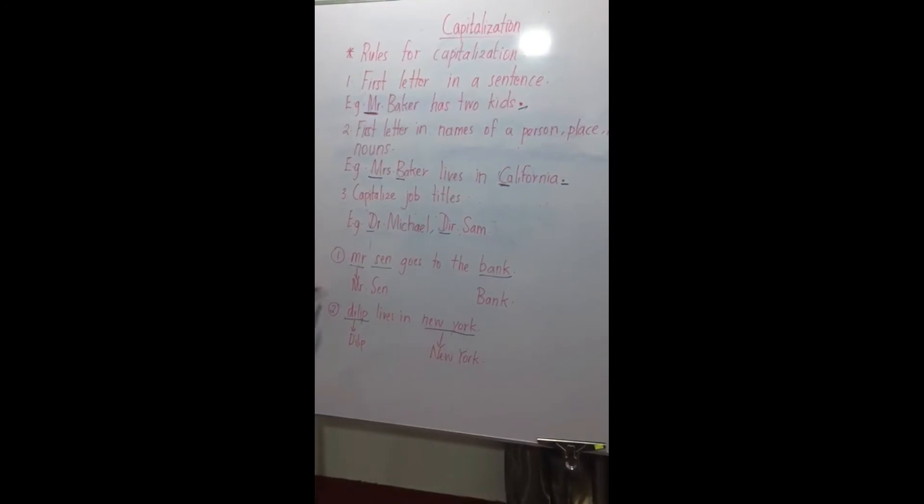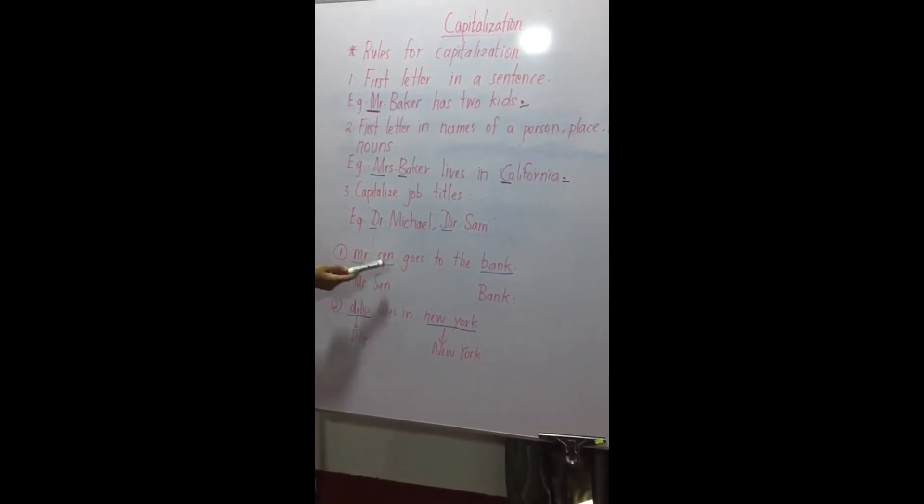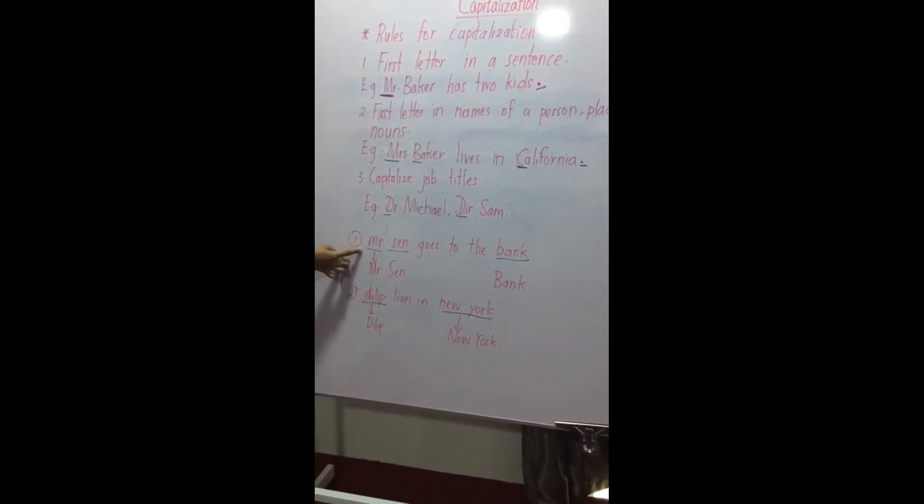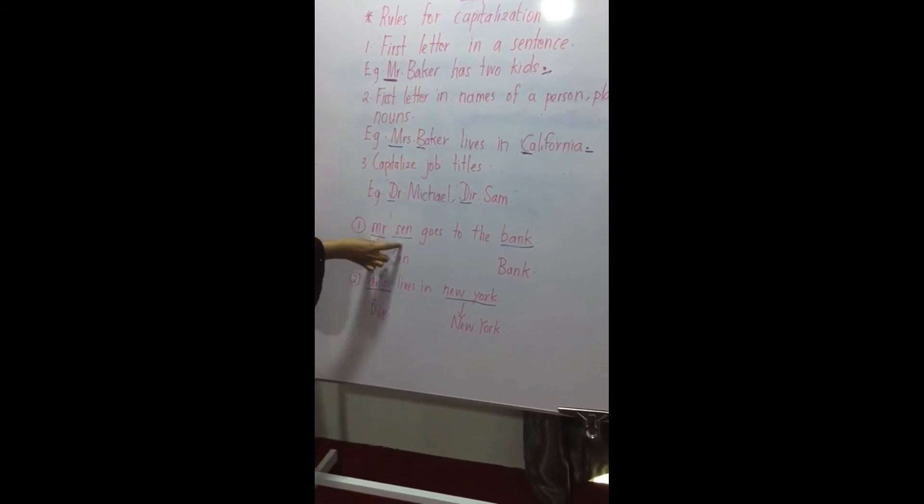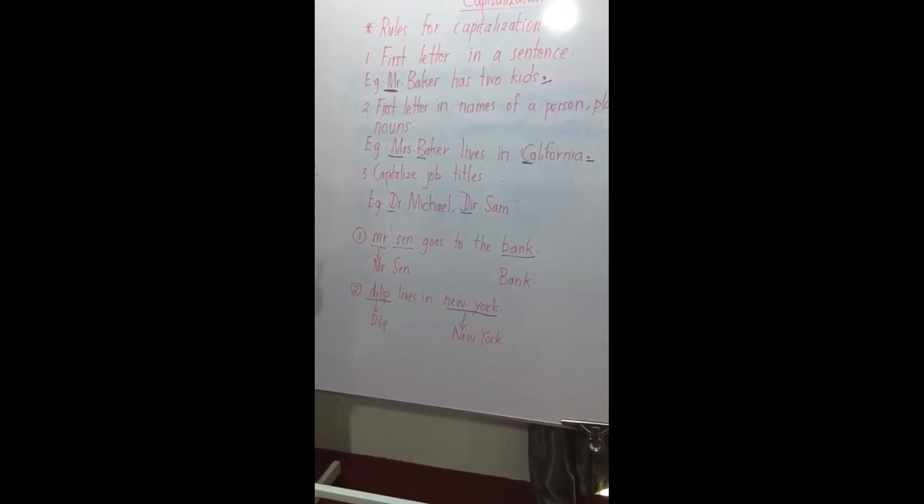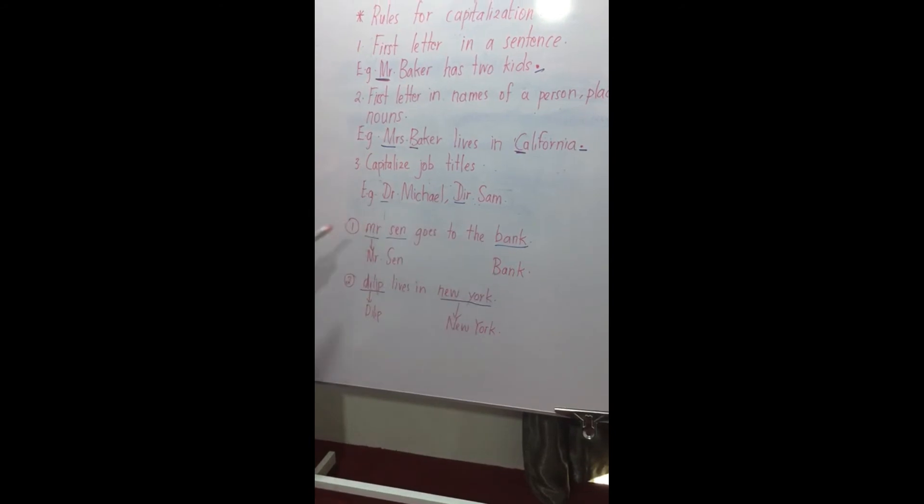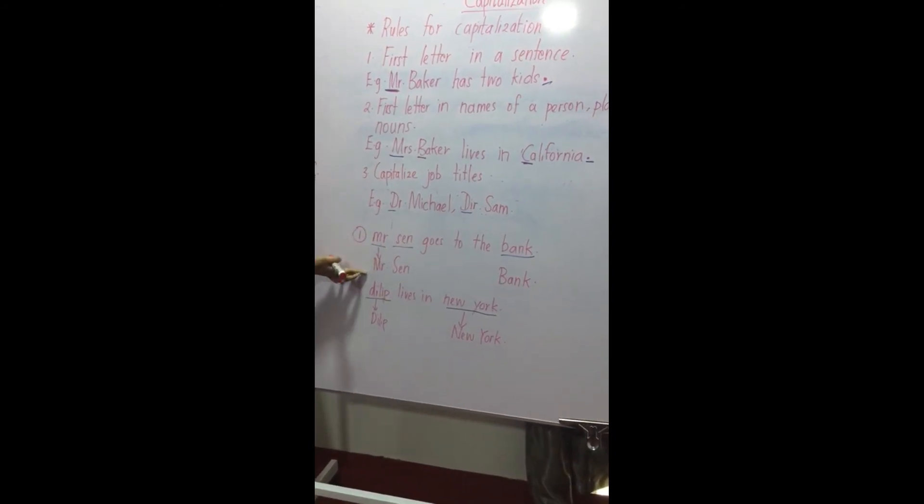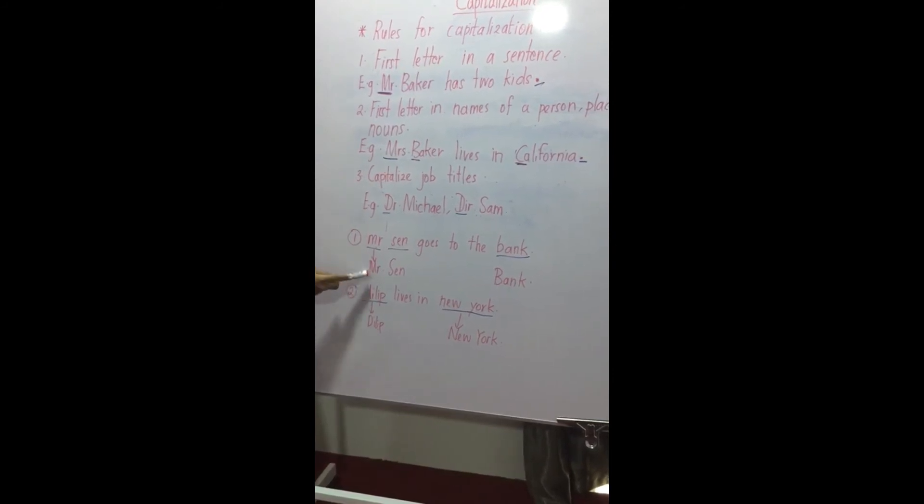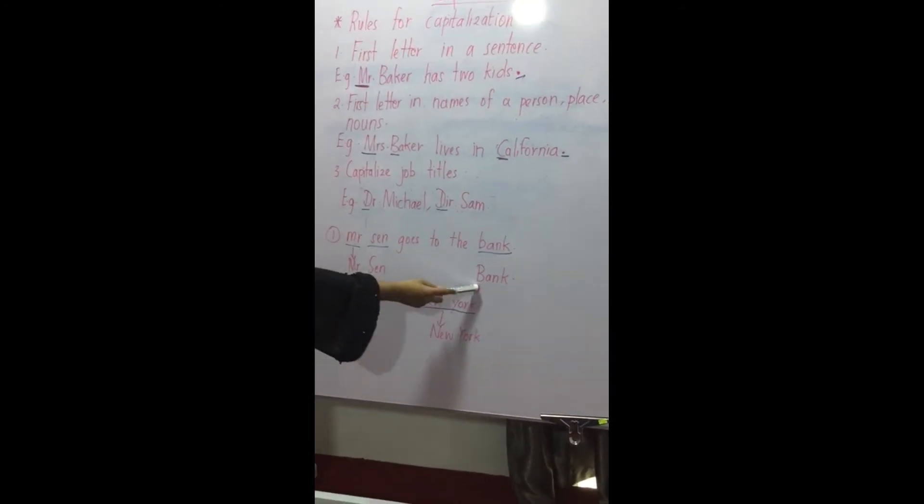Now let's look at some sentences as examples. Number one, Mr. Sen goes to the bank. Here, in this sentence you can see the name of a person and the place. The first letter starts with a simple letter. So when you rewrite this sentence, you have to make this simple letter as capital letters. So here I have capitalized letter M, S and the letter B.